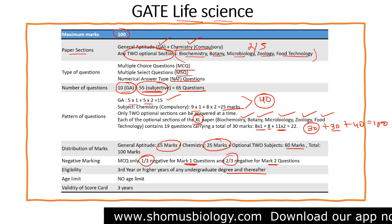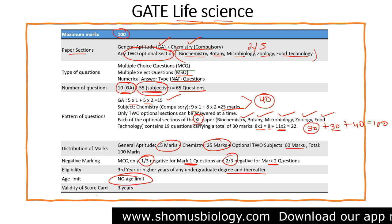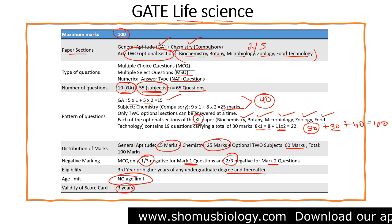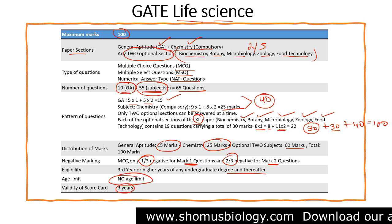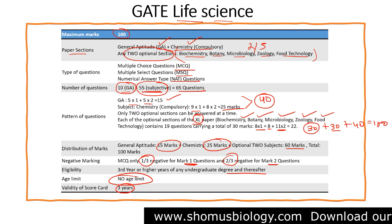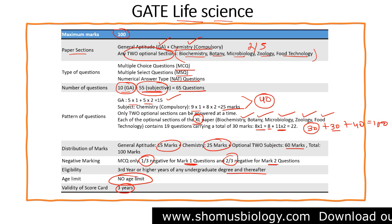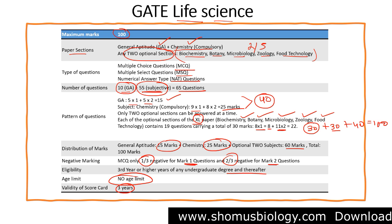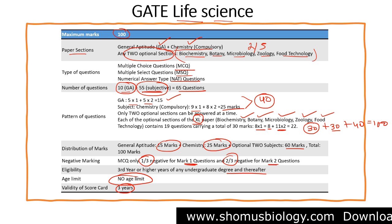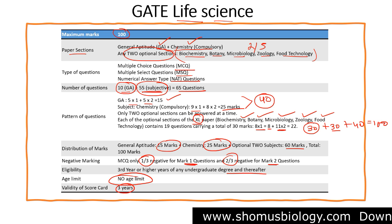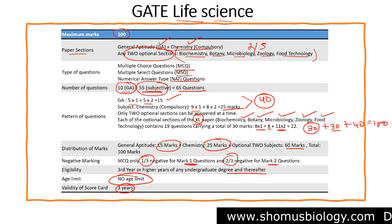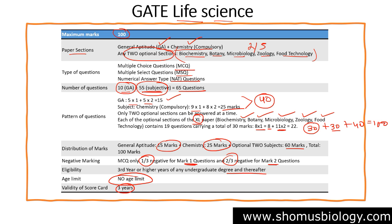For eligibility, students in their third year or higher of any undergraduate degree are eligible for gate life science. There is no age limit. The validity of the scorecard is three years, so if you qualify, your qualifying rank will remain valid for the upcoming three years.